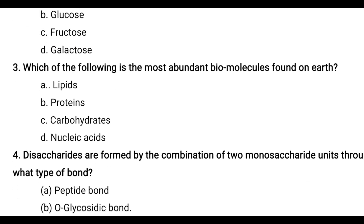Third question: Which of the following is the most abundant biomolecule found on earth? Options are lipids, proteins, carbohydrates, and nucleic acids. Among them, carbohydrates are the most abundant biomolecules found on earth — carbohydrates is the correct answer.